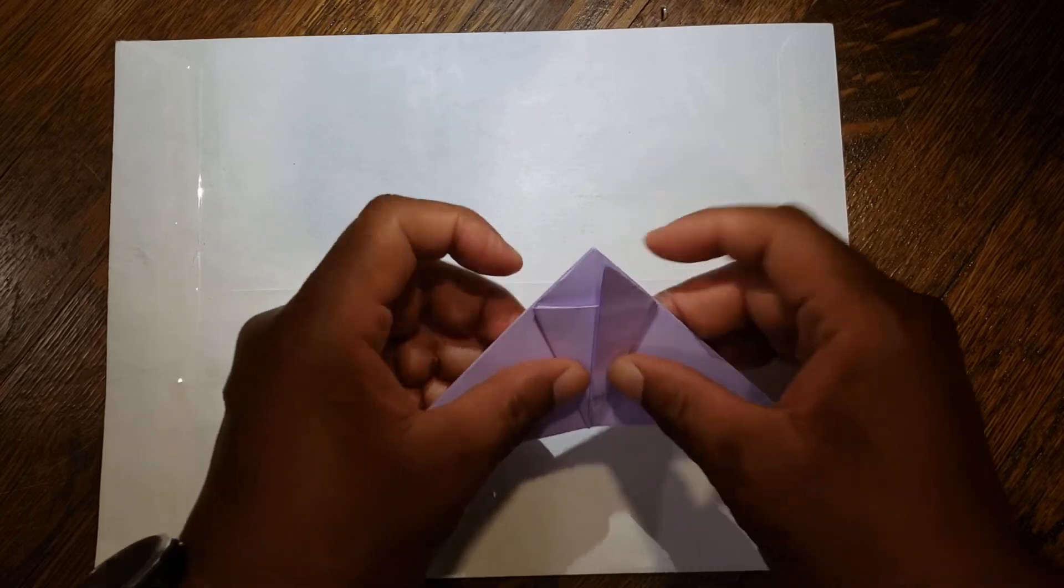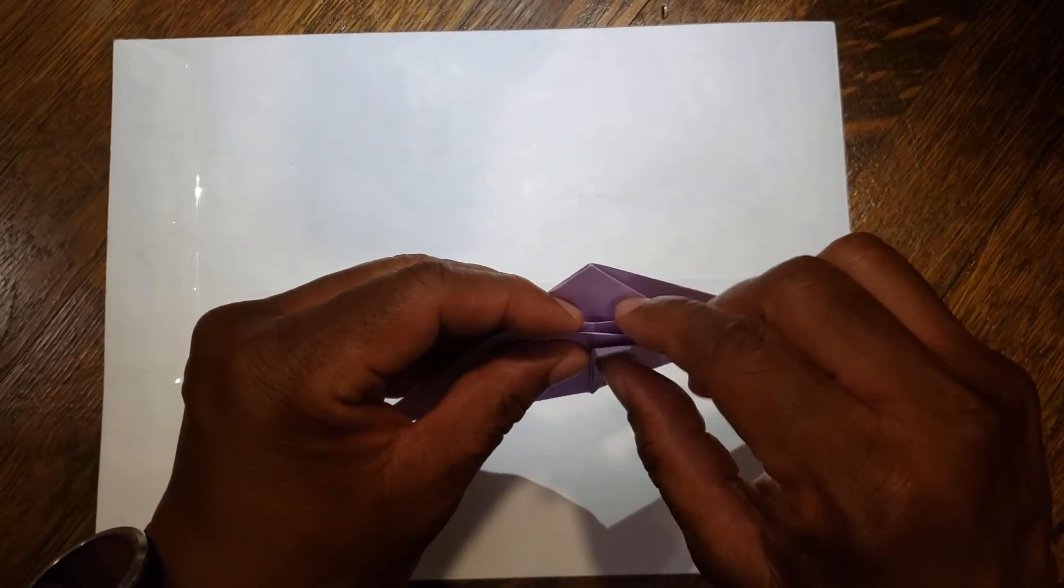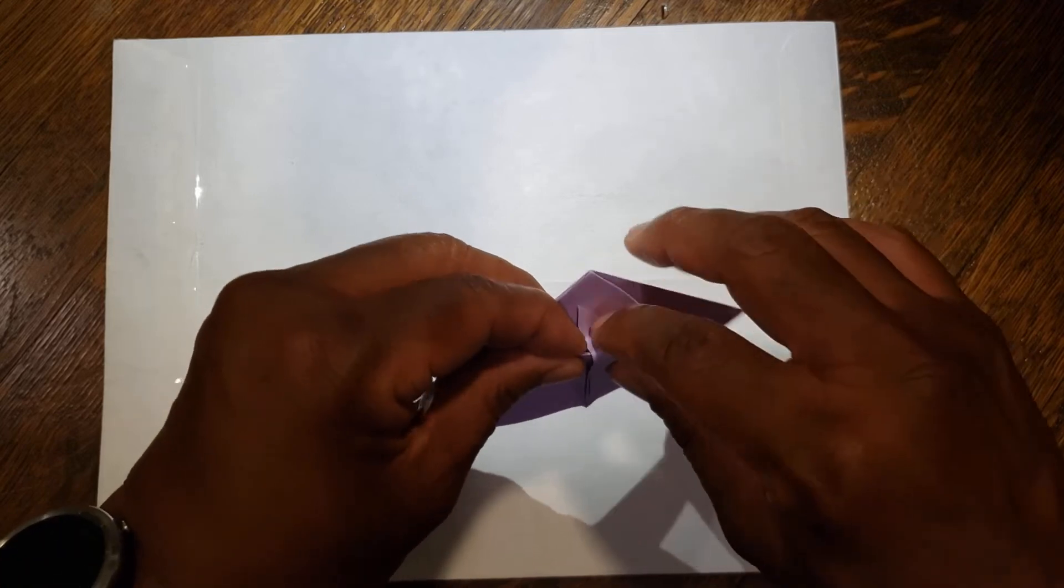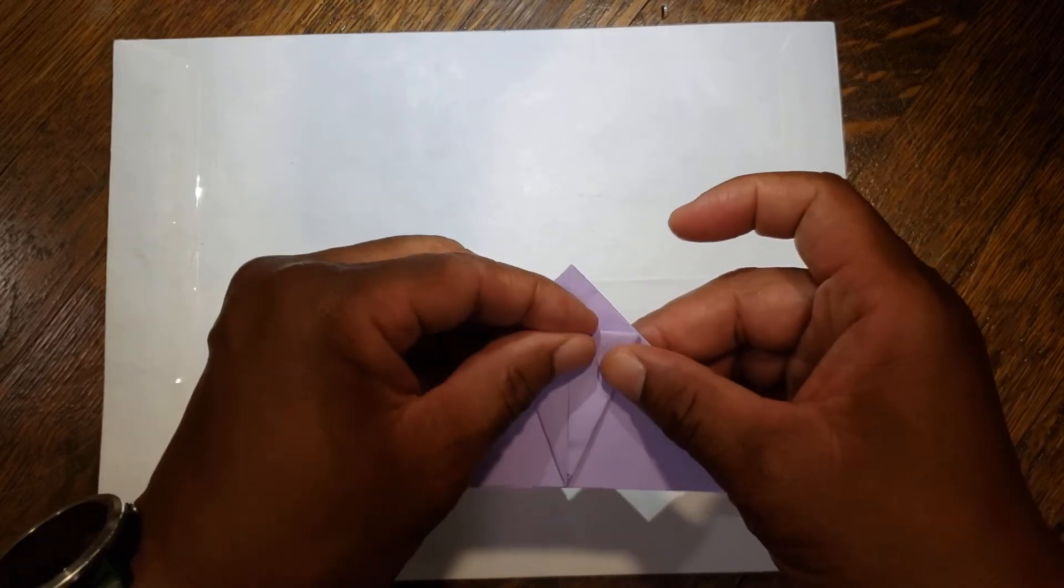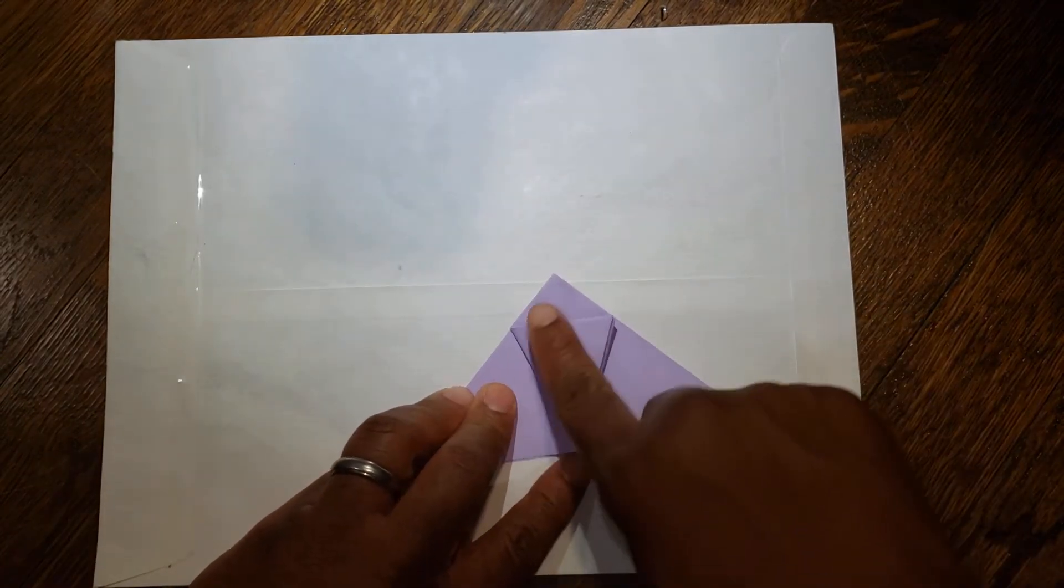Then pick your whole paper up. This time, instead of hiding behind one flap, we're going to hide behind both flaps. So tuck it in the back. Again, we have a kite on the side of the paper.